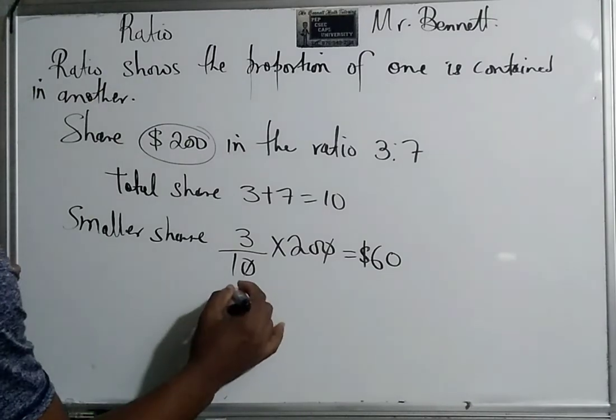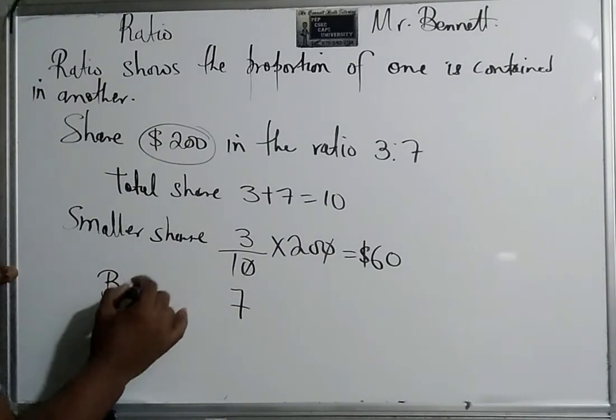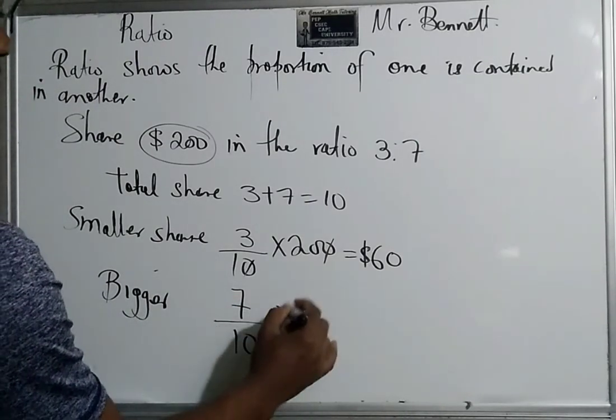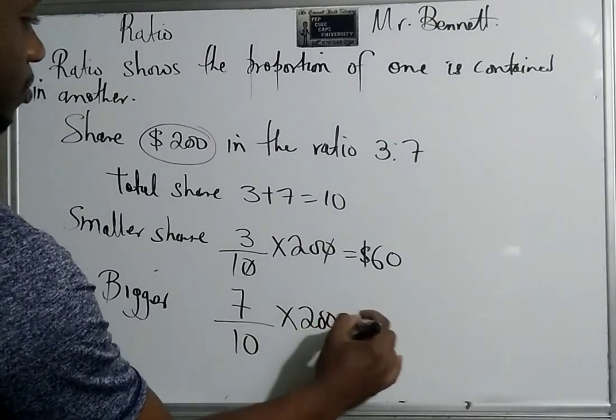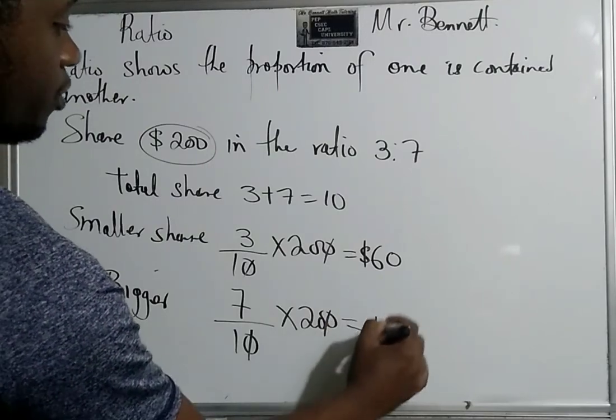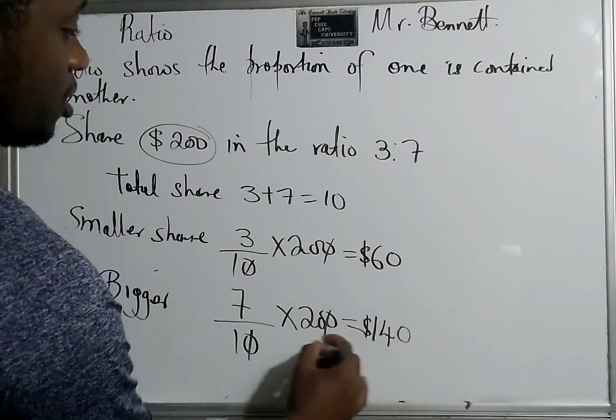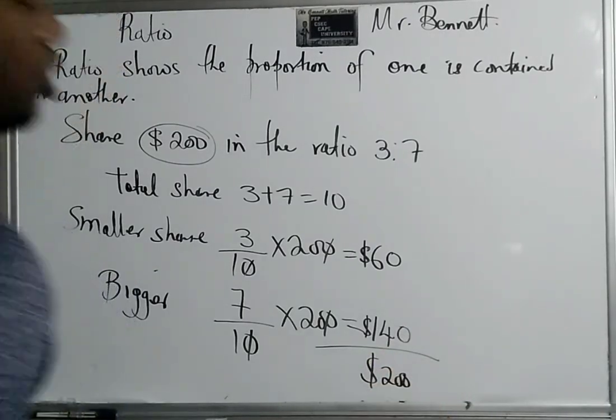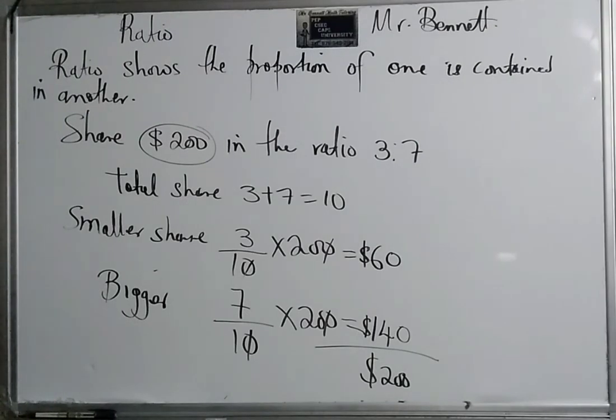And of course we can always subtract sixty dollars from 200 and the remainder would be the bigger share, because the total share must come to 200 dollars. However, we can show working by saying the bigger share would be seven out of the ten, so seven times 20 is 140. As I said before, the total shares must come to two hundred dollars because it's two hundred dollars being shared between the two persons.